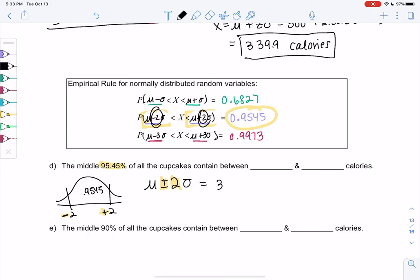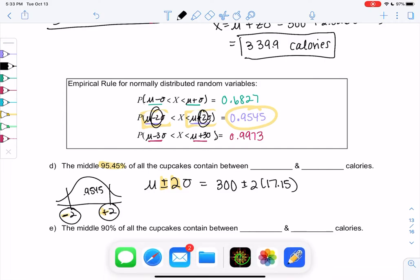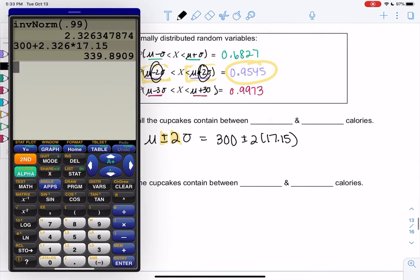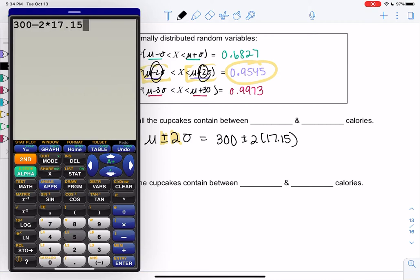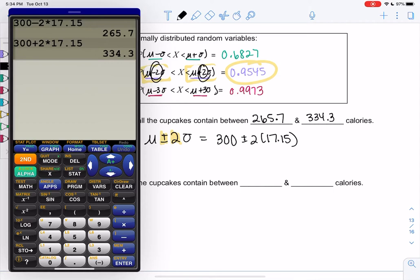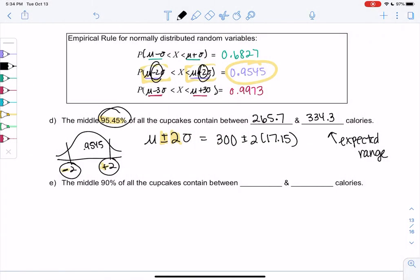We're going to take the mean, which was 300. We're going to add and subtract two times the standard deviation of 17.15. So the middle 95.45% of cupcakes will be in between 300 minus 2 times 17.15, 265.7, and 300 plus 2 times 17.15, 334.3. This is the same as expected range. The reason this was expected range is 95.45% is in that range, so we expect most to actually be in that range.